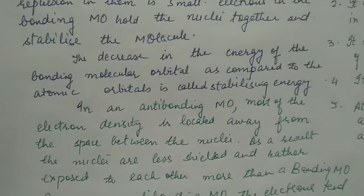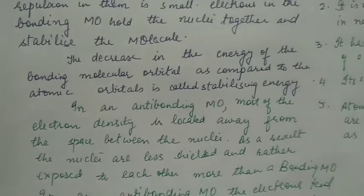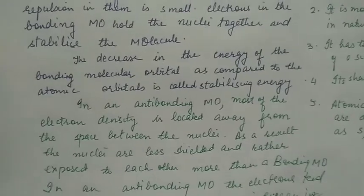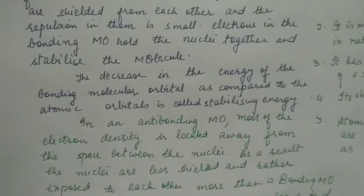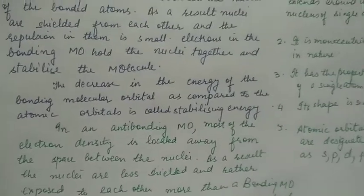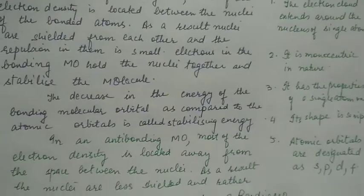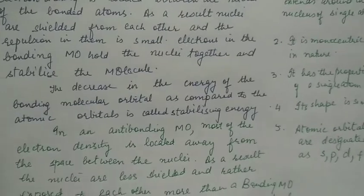The electrons in the bonding molecular orbital hold the nuclei together and stabilize the molecule, and their energy decreases compared to that of the atomic orbital. The decrease in energy of the bonding molecular orbital as compared to the atomic orbital is called stabilizing energy.